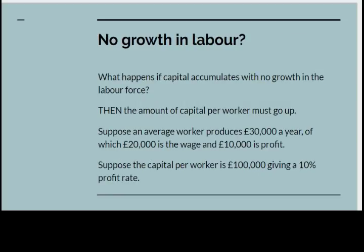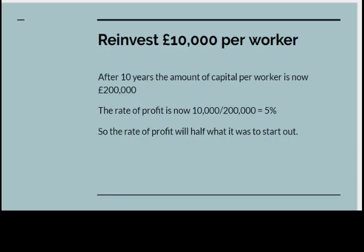But what happens if capital accumulates and there is no growth in the labour force? Suppose the labour force is fixed — then the amount of capital per worker has to go up. Suppose an average worker produces £30,000 a year, of which £20,000 is wage and £10,000 is profit, and the average amount of capital per worker is £100,000 — so the rate of profit would be 10%. If the employers reinvest £10,000 per worker, after 10 years the amount of capital per worker would have risen to £200,000, and the rate of profit would now be £10,000 divided by £200,000, which is 5% — half what it was to start with.